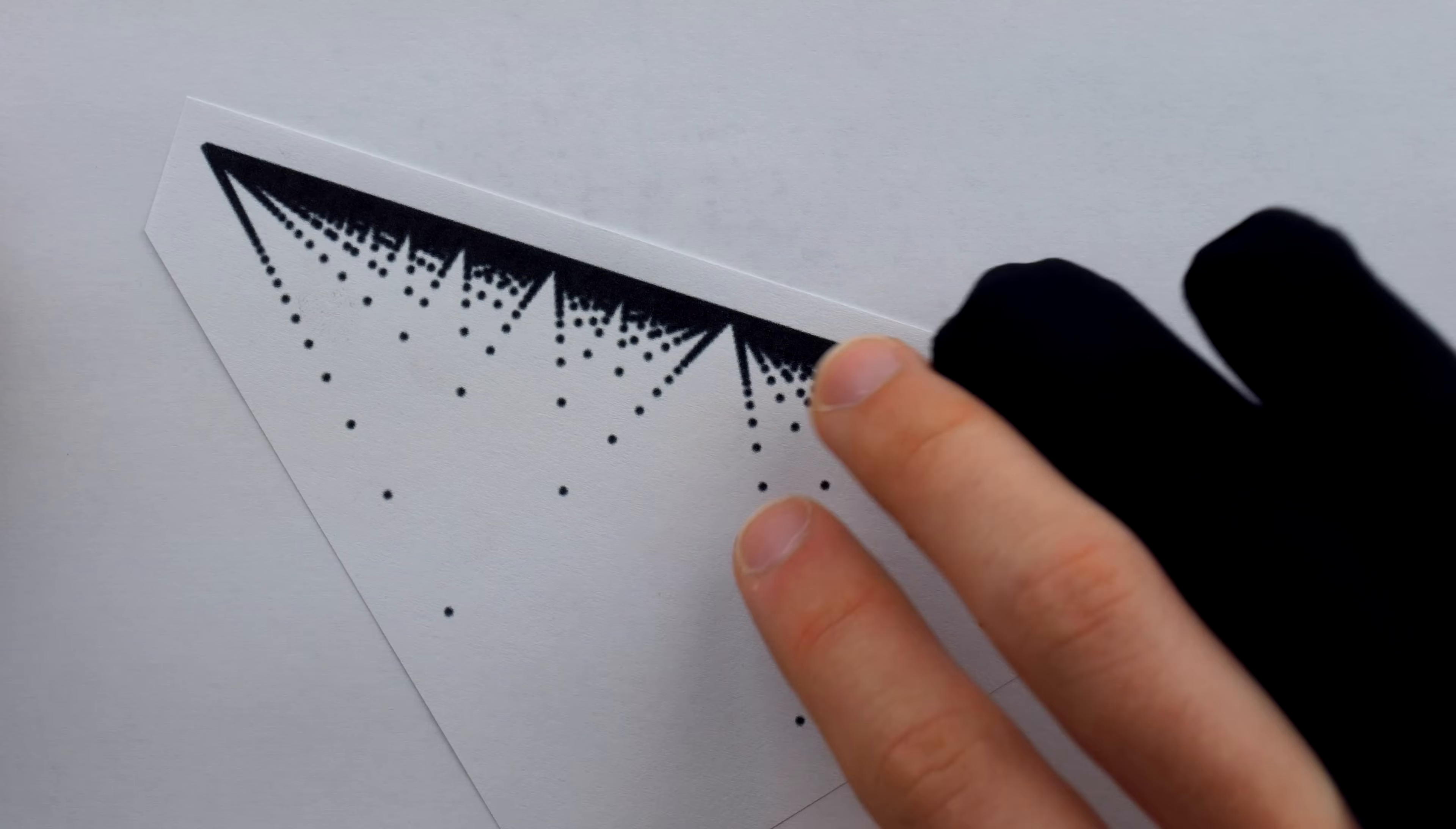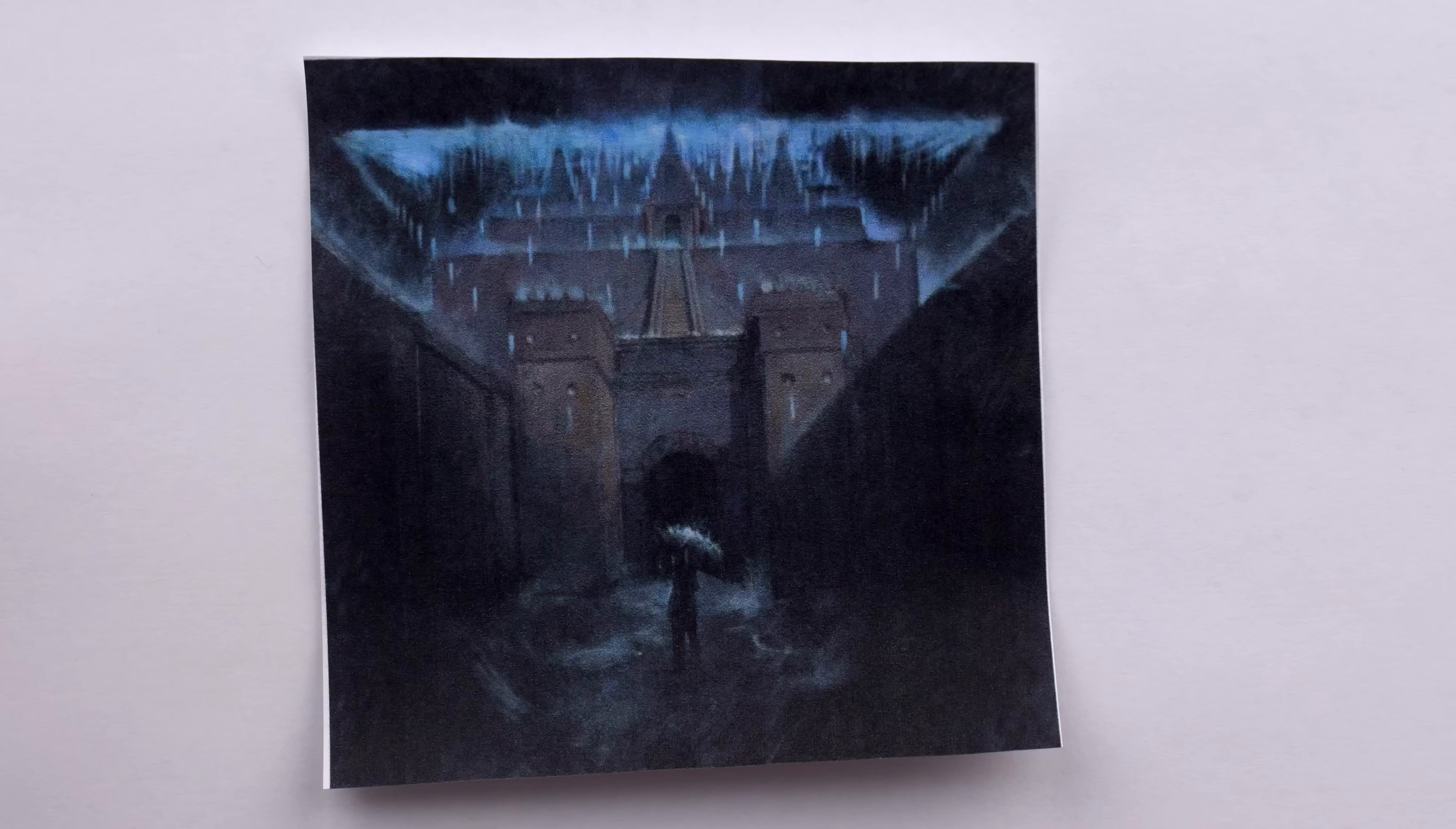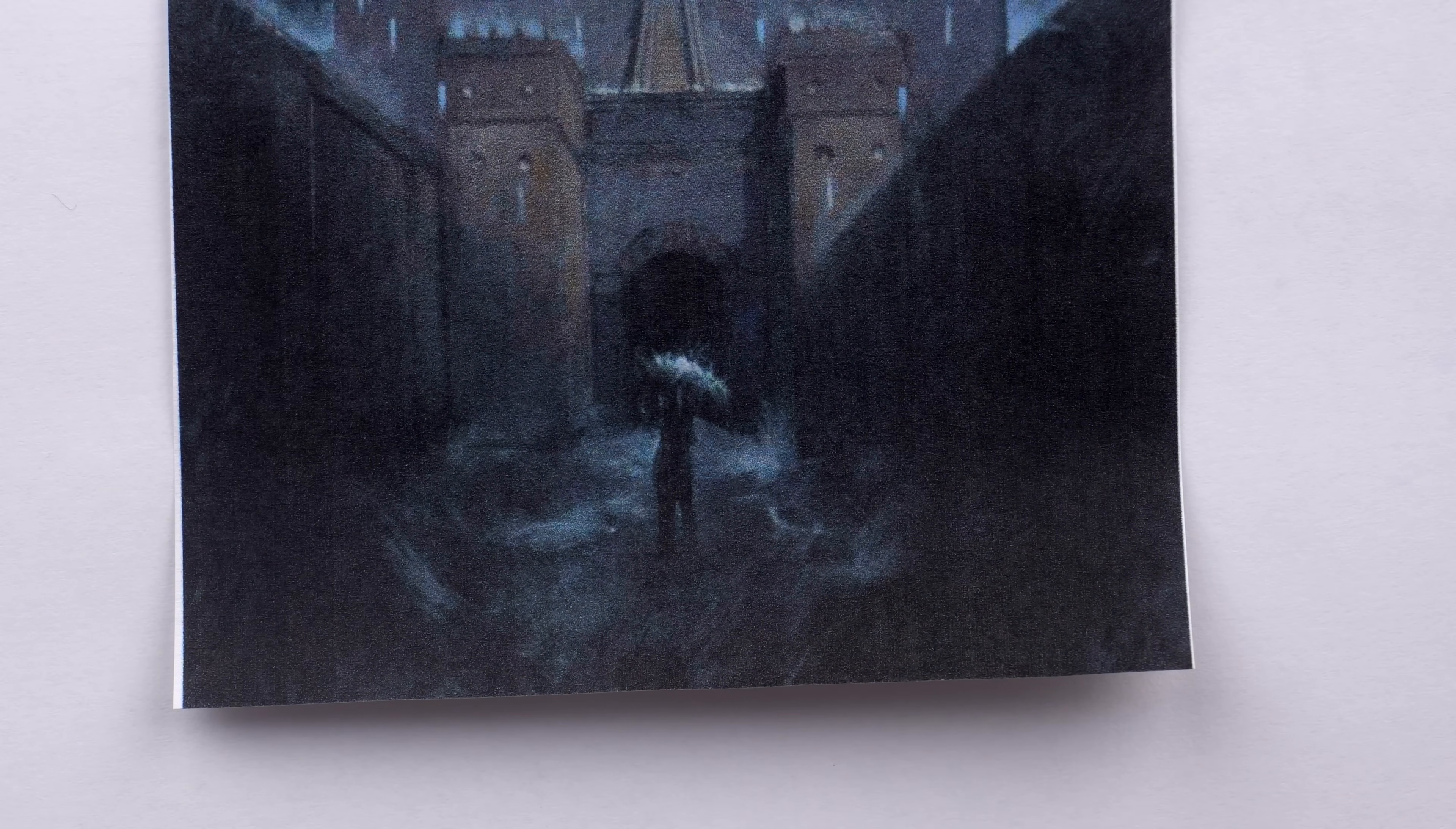This function is discontinuous at every rational number, but continuous at every irrational number. Mathematician John Conway dubbed this function stars over Babylon, but if you turn it upside down, you could also see it being called the raindrop function. It's a really cool-looking function, so for the design, did I just take this function and put it on a shirt? No way.